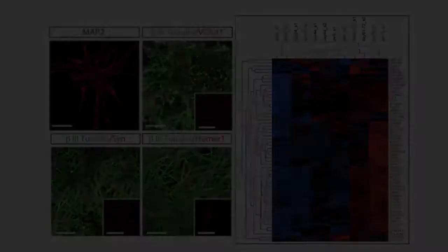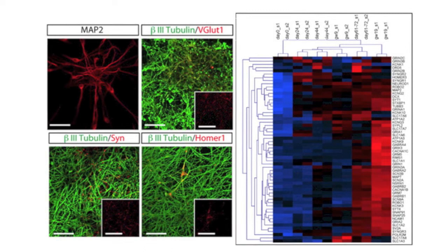Later in culture, at around day 40, many of these progenitors have already exited the cell cycle and become neurons that presented pyramidal morphology and that expressed genes for generic expression of pyramidal neurons and specific layer identity. This has been tested by immunofluorescence, qPCR, and microarray.